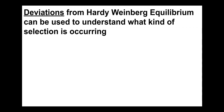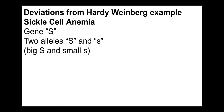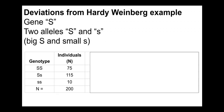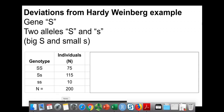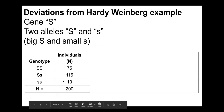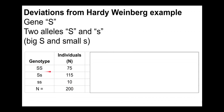We can go take a sample of individuals from a population, determine allele frequencies, plug those allele frequencies into the Hardy-Weinberg equilibrium equation, and use the results to help us understand if and what type of evolution is happening. For this example, we're going to be using sickle cell anemia. There's a gene S with two alleles: big S and little s.